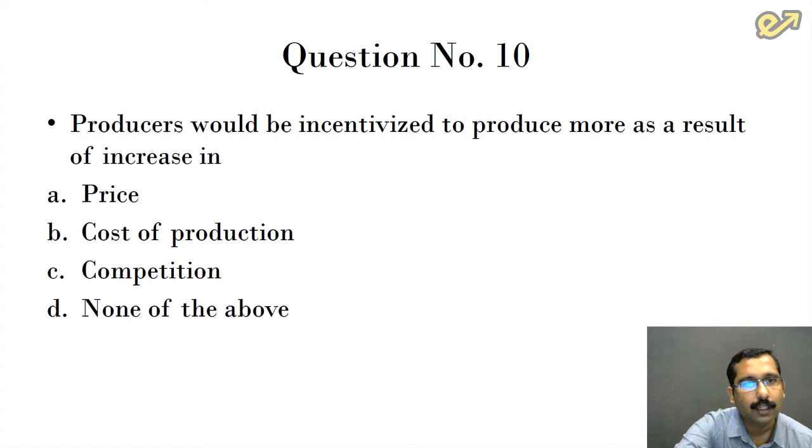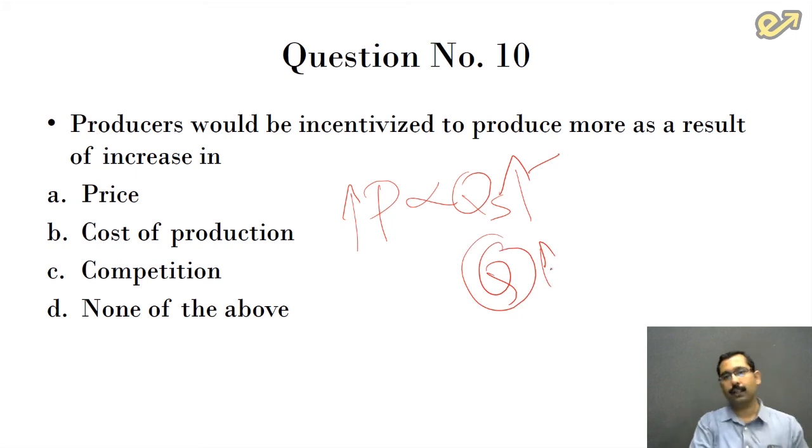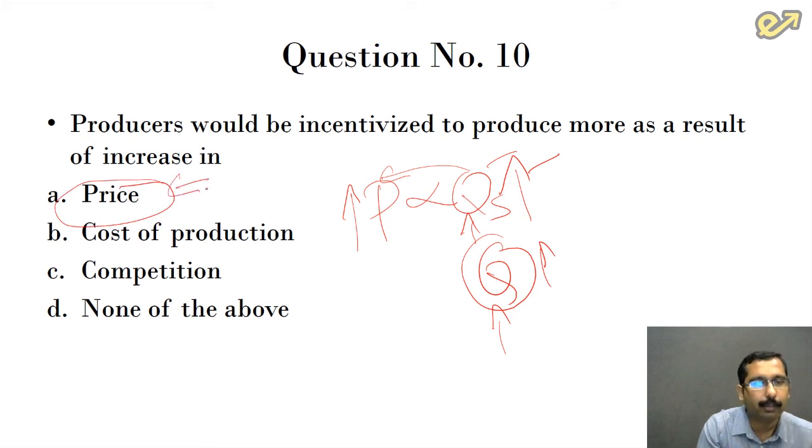Question number 10: Producers would be incentivized to produce more as a result of increase in dash. Price is directly proportional to quantity supplied. When price increases, quantity supplied also increases. For us to increase quantity supplied, the production or output should also be increased. Only then will we be able to supply more. When are we ready to supply more? When the price is more. The producers will be happy to produce more if the price available for their goods and services in the market is higher. So the answer is option one, price.